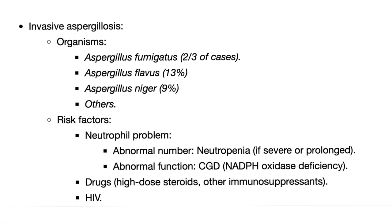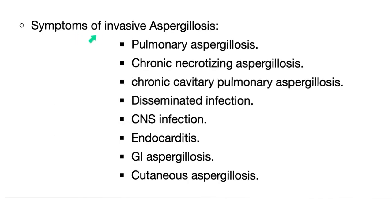Organisms causing invasive aspergillosis include Aspergillus fumigatus in the vast majority of cases, and also Aspergillus flavus, among others. Risk factors include neutrophil problems — low number (neutropenia) or low function (chronic granulomatous disease) — drugs such as high-dose steroids and other immunosuppressants, and HIV. Manifestations include pulmonary aspergillosis, chronic necrotizing aspergillosis, chronic cavitary pulmonary aspergillosis, disseminated infection, CNS infection, endocarditis, GI aspergillosis, and even cutaneous aspergillosis.